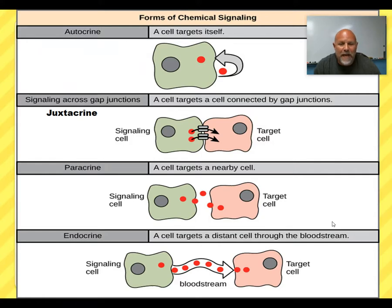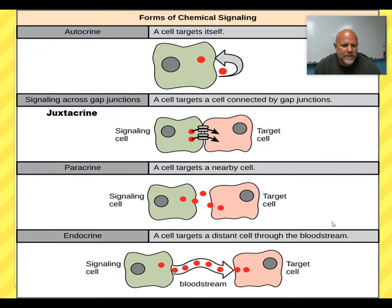Paracrine means nearby — so either nearby cells, or maybe you're moving across the synapse of a nerve cell, or a synapse between a nerve and a muscle cell. Endocrine means within the body; "endo" means within. So endocrine means communicating with another cell somewhere else within the body.